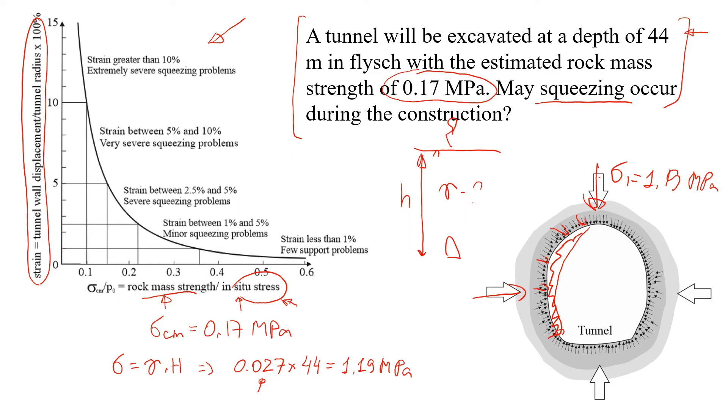Now we're going to estimate this ratio, which is strength of rock mass divided by this stress. It has a slightly different letter P. Usually for stress we use sigma, but I'm not sure why they use P. It will have 0.17 divided by 1.19 and that will give us the answer of 0.14.